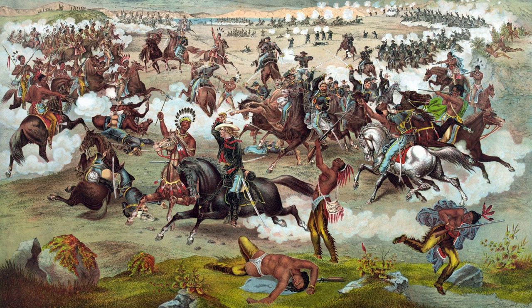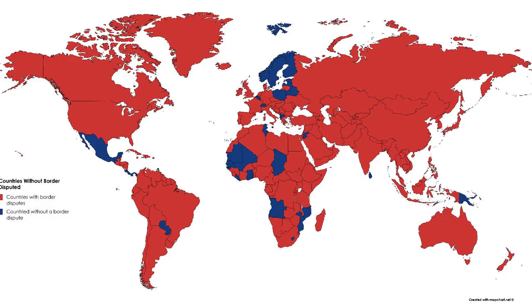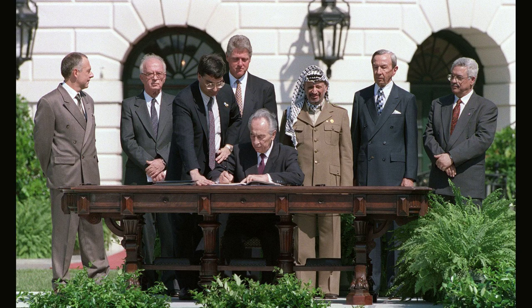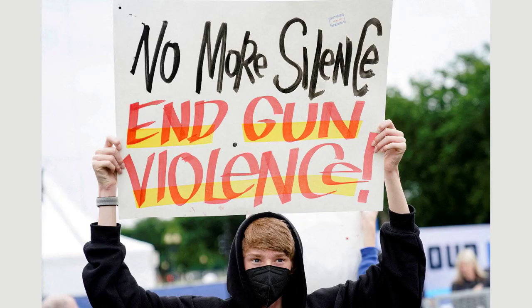Over the years, the conflict has been marked by numerous wars, such as the Six-Day War in 1967 and the Yom Kippur War in 1973. These conflicts have shaped the borders and territorial disputes that continue to be at the heart of the conflict. Efforts for peace have been made, most notably through the Oslo Accords in the 1990s, which aimed to establish a two-state solution. However, the peace process has been marred by setbacks, including acts of violence, settlement expansions and disagreements over the status of Jerusalem.